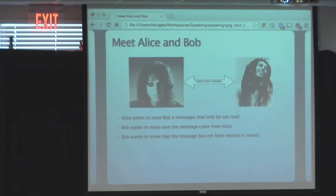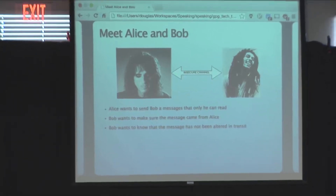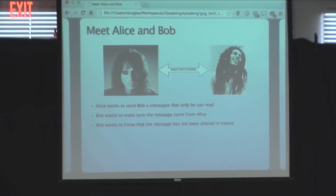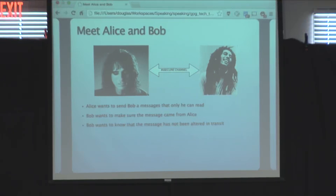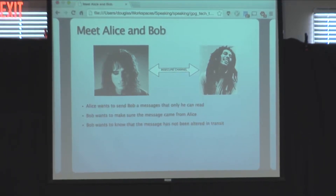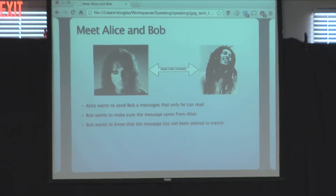Since this is a crypto track talk, let's introduce the usual players: Alice and Bob. Alice wants to be able to talk to Bob over an insecure channel. Some things they're worried about: no eavesdroppers — only Bob can read a message Alice sends. If I'm Bob receiving a message, I want to make sure it's really coming from Alice and not someone pretending to be her. And I want to be sure the message hasn't been changed in transit.